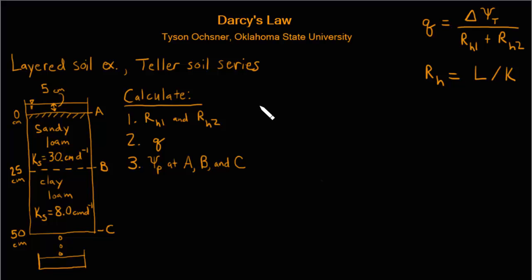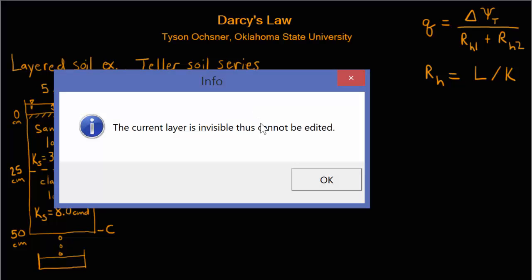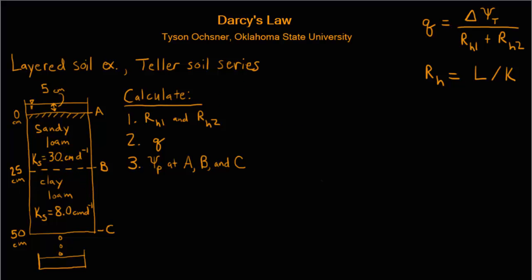We start by calculating RH1 for the first layer. The hydraulic resistance RH1 is equal to the length or thickness of the layer which is 25 centimeters divided by the conductivity which is 30 centimeters per day. So we compute that ratio and find the answer is 0.833 days.